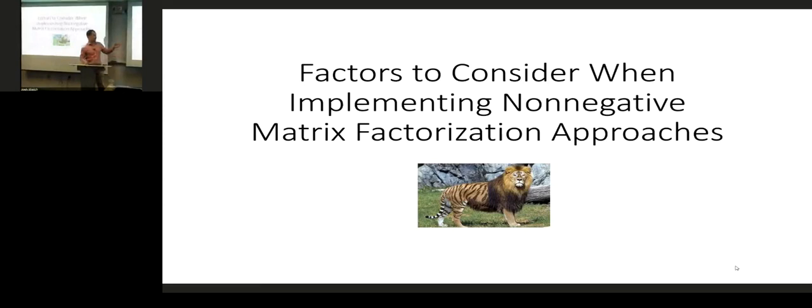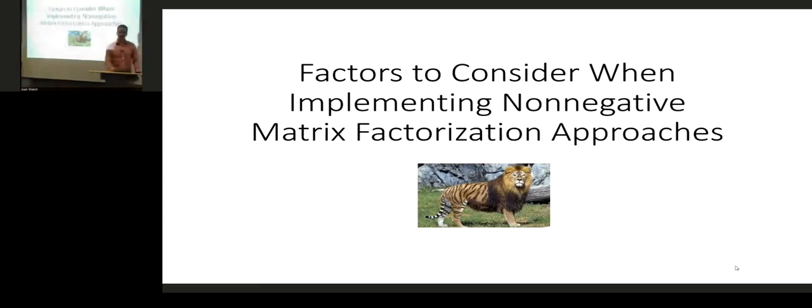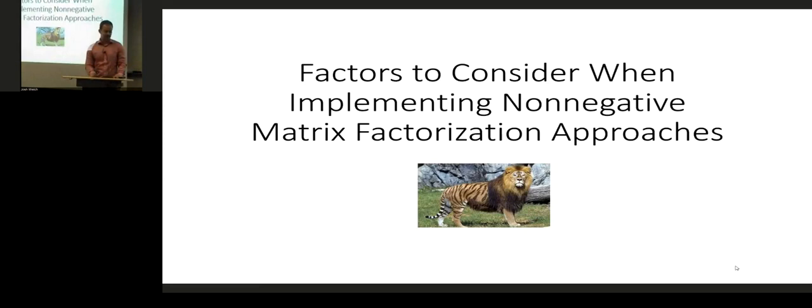We named our algorithm LIGER, and this is a picture of a liger — what you get if you cross a lion and a tiger. I'm excited for this talk because I'm going to get to focus on some of the algorithmic details, which I don't usually get to talk about because there are a lot of biologists in the audience. Usually these things get relegated to the end of the supplement, so I'm excited to get to share a little bit about the actual inner workings of the approach.